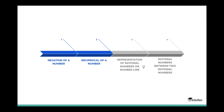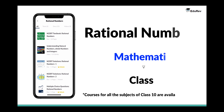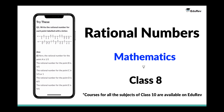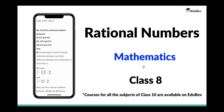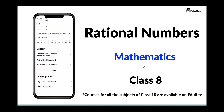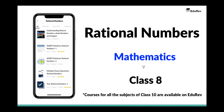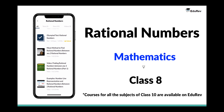To recap: today we understood negation of a number, reciprocal of a number, how to represent rational numbers on a number line, and how to find rational numbers between two given rational numbers. We have reached the end of our discussion. You can visit EduRev to attempt the respective test to check your understanding. You can also find more content on other subjects like social studies and science. Stay tuned for more videos. Thank you.